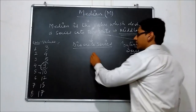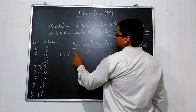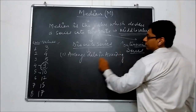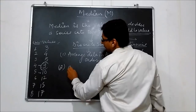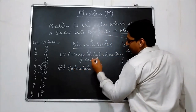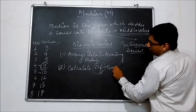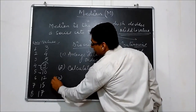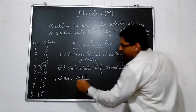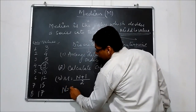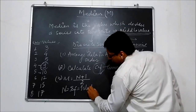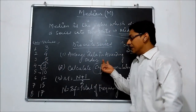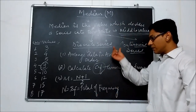In discrete series, first of all arrange data in ascending order. Calculate CF — CF means cumulative frequency. Then use formula M = (n+1)/2, where n equals sigma f, or the total of frequency. In individual series, n means number of items, whereas in discrete series, n means total of frequency.